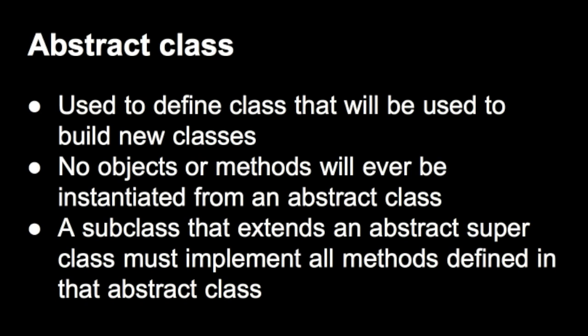An abstract class is basically used to define a class that will be used to build new classes. The fundamental part of abstract classes is that no objects will ever be instantiated from an abstract class — you can never create an instance of an abstract class. The reason is that you want to create instances of other classes that inherit the methods and variables defined in an abstract class. A subclass that extends an abstract superclass must implement all the methods defined in that abstract class, so you can create objects and access those parts of the abstract class from those subclasses.